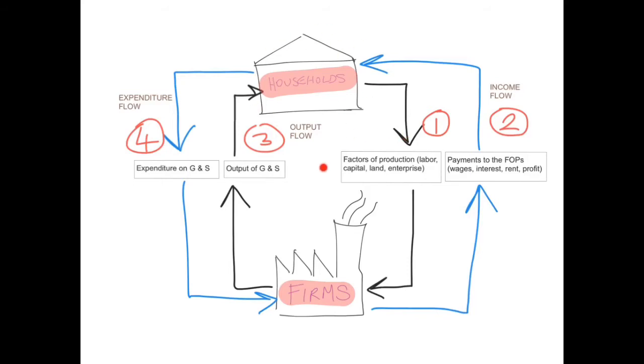The firms use those factors of production to produce the output of goods and services. As you can see here, the households give the factors of production, and firms use the factors of production to produce the output of goods and services.